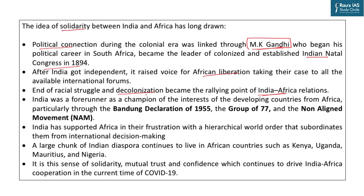This was strengthened through the Bandung Declaration of 1955. The Bandung Conference happened in Indonesia, where 29 African and Asian nations met to decide upon the role of third world countries in development and especially decolonization. India, as a member of G77, always took up important issues concerning Africa and, throughout the Non-Aligned Movement, helped the process of decolonization in Africa. Even after African independence, India supported African nations in their frustrations with the hierarchical world order.